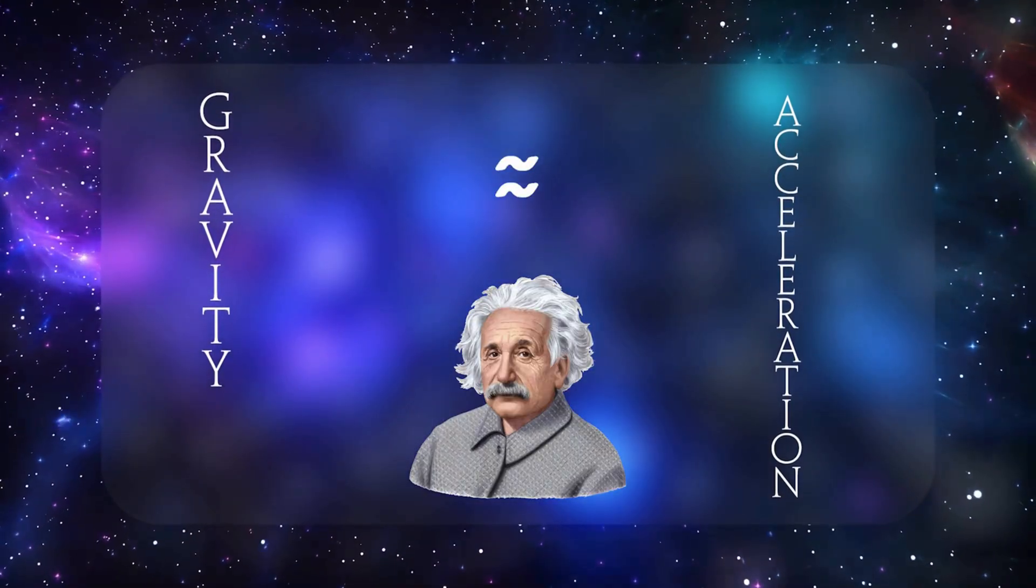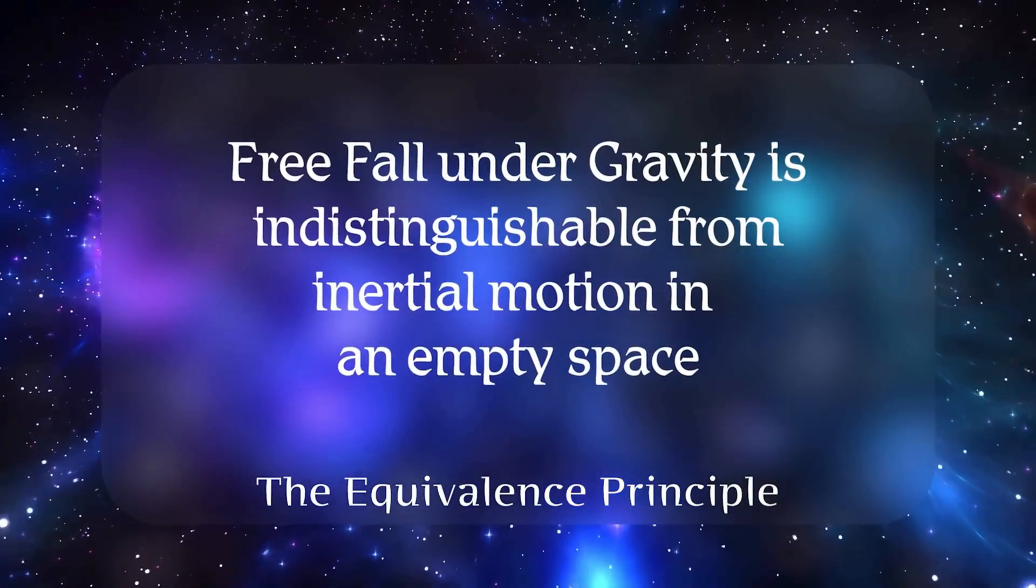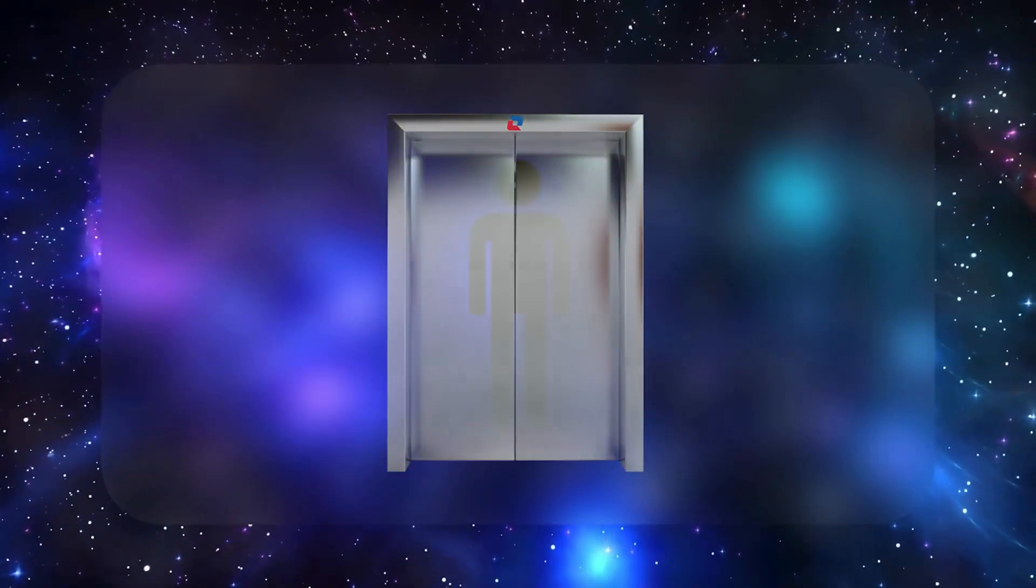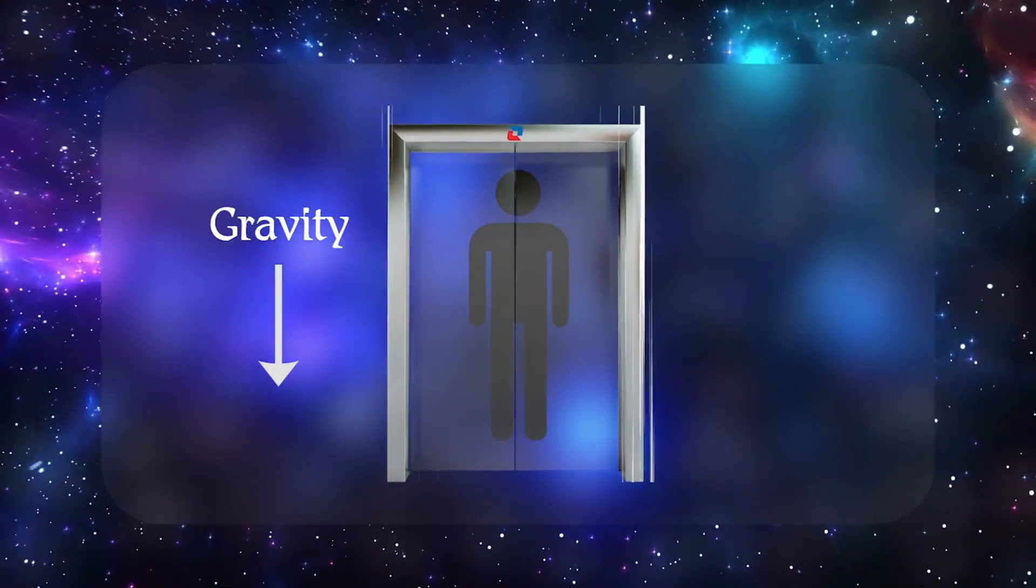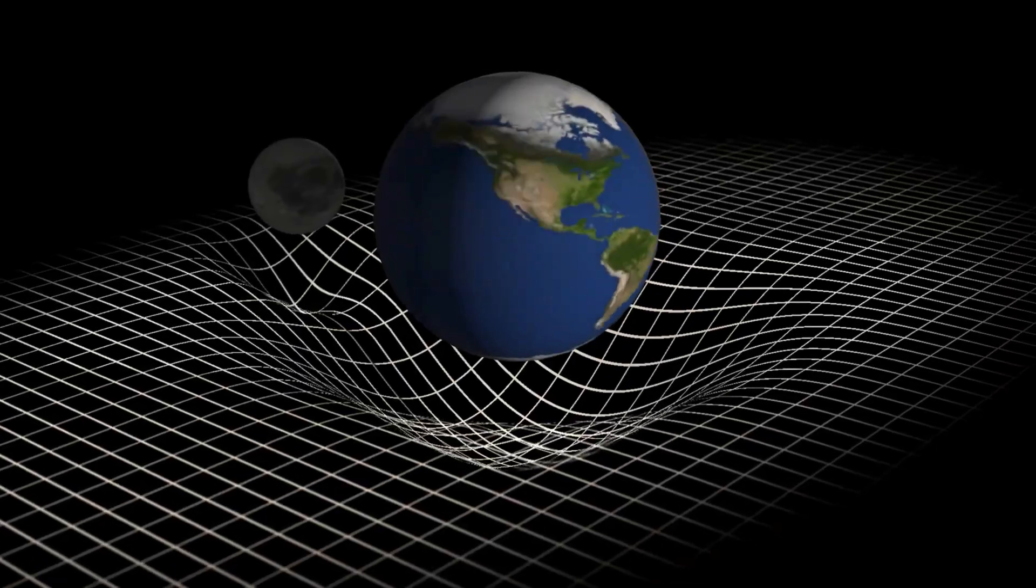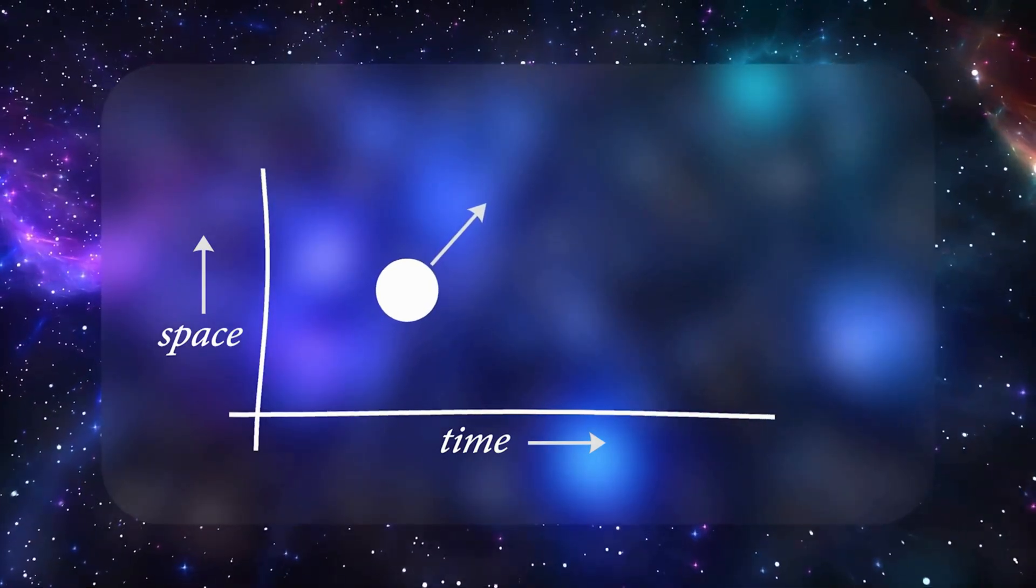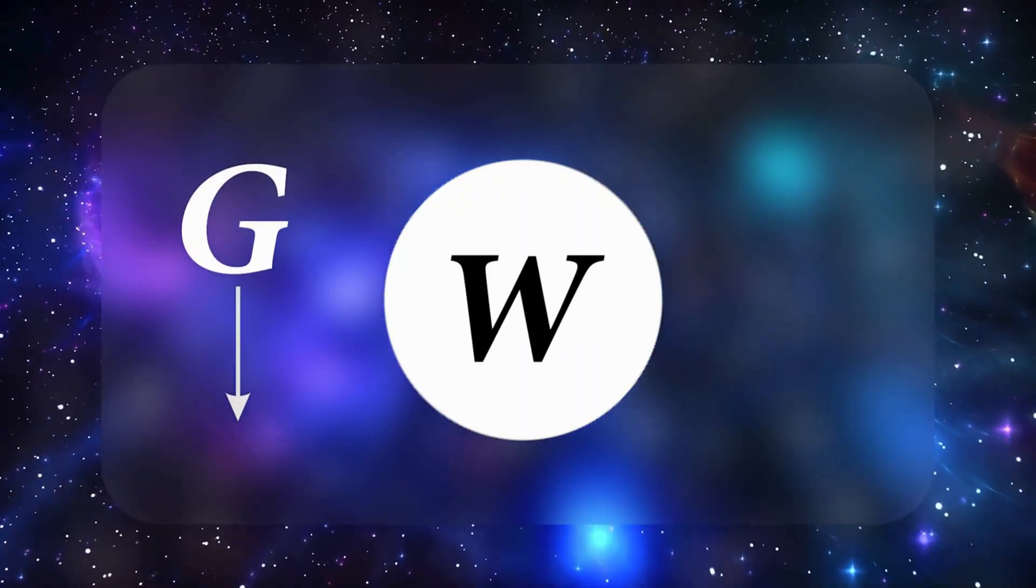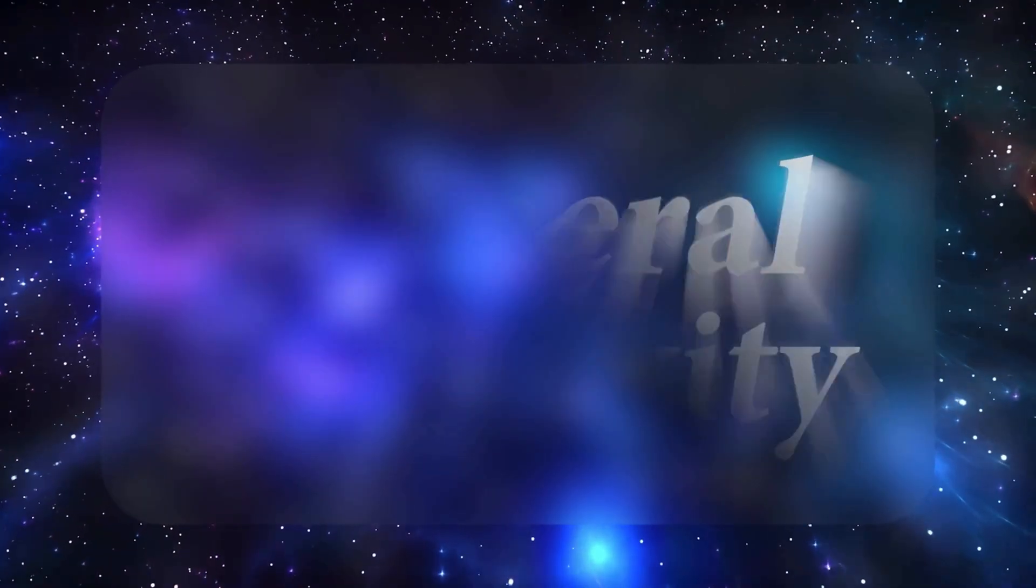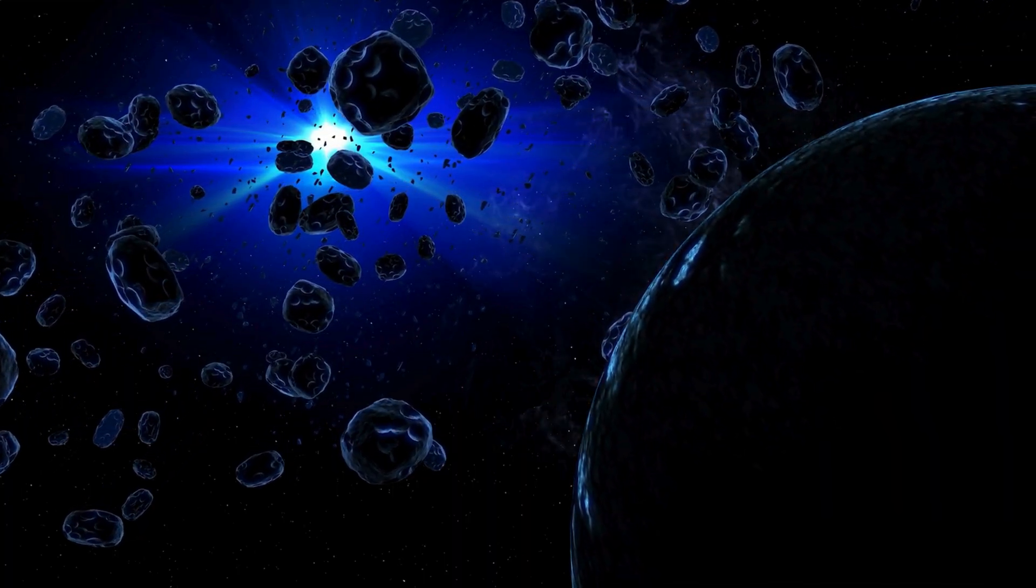By 1907, Einstein had begun wondering: what if gravity and acceleration are actually the same phenomenon at heart? This led him to the equivalence principle, the idea that freefall under gravity is indistinguishable from inertial motion in empty space. If you're in a tiny elevator, you can't tell whether you're being pulled down by gravity or accelerating upward. That insight cracked open the door to general relativity, where the geometry of spacetime itself would play the starring role. In essence, special relativity tells us that time and space flex with motion, but it stays silent on what happens when mass and gravity enter the scene. That's where general relativity comes in. Einstein set out to describe not just how objects move when traveling at high speeds, but also how they move when massive bodies warp the fabric of spacetime. The result would turn our notion of forces upside down.